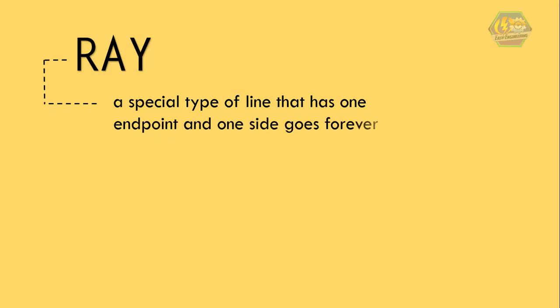Another special type of line is called a ray. A ray is a special type of line that has one endpoint and one side goes forever, so we only put an arrow on one side that keeps going forever.